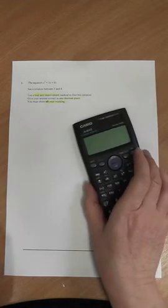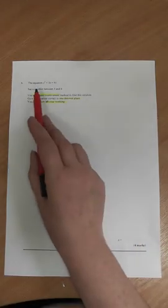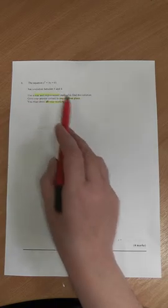This would be on a calculator paper so obviously we're going to use a calculator to do this question. It gives us the equation. It tells us it has a solution between three and four and as we've already said we need the answer to one decimal place.